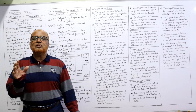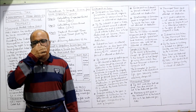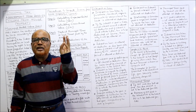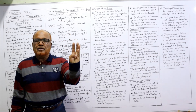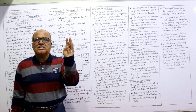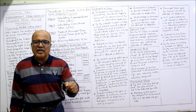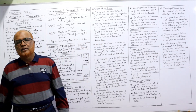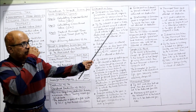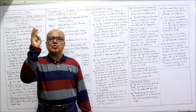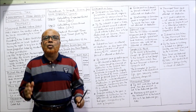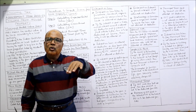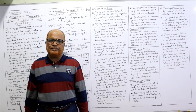The second deduction under Section 24B is interest on loan. Remember: interest paid on any loan will not be allowed unless the loan is taken to purchase the property, construct the property, repair the property, renovate the property, or reconstruct the property. If the loan is taken for any other purpose, interest paid will not be allowed as a deduction.